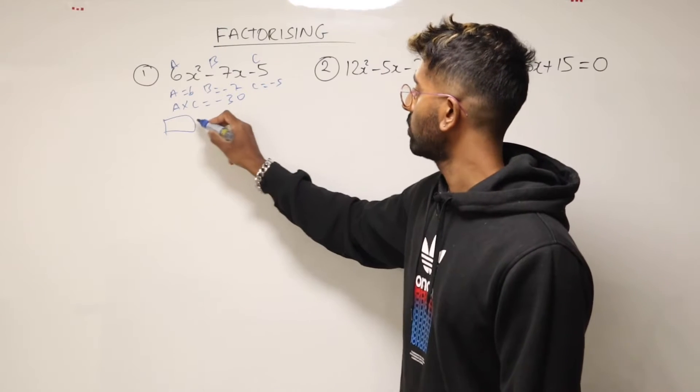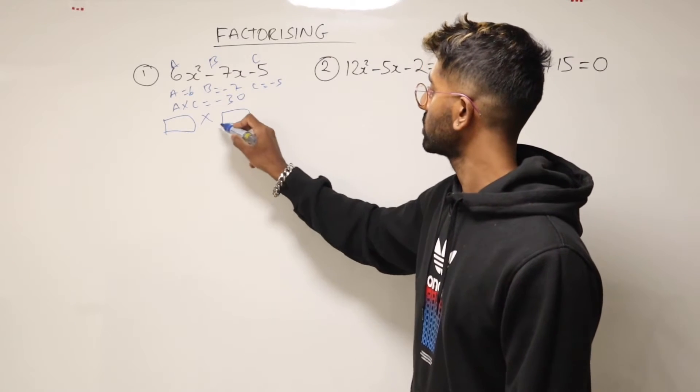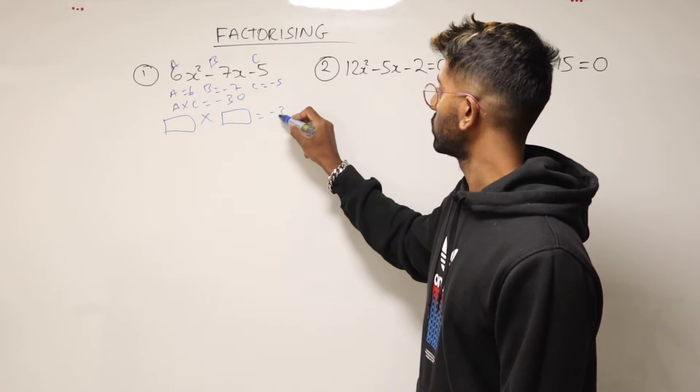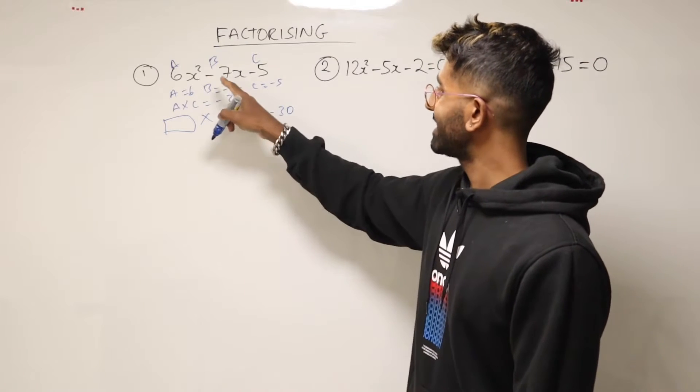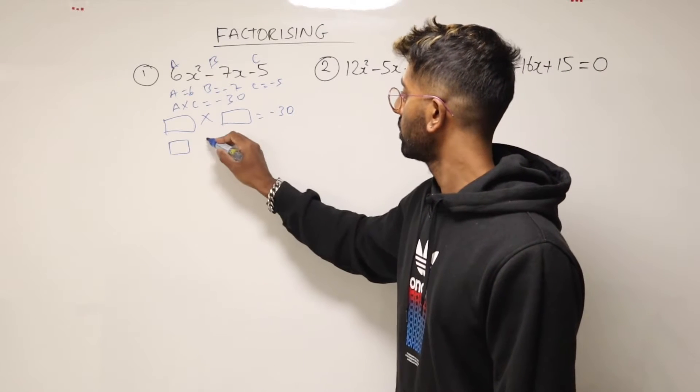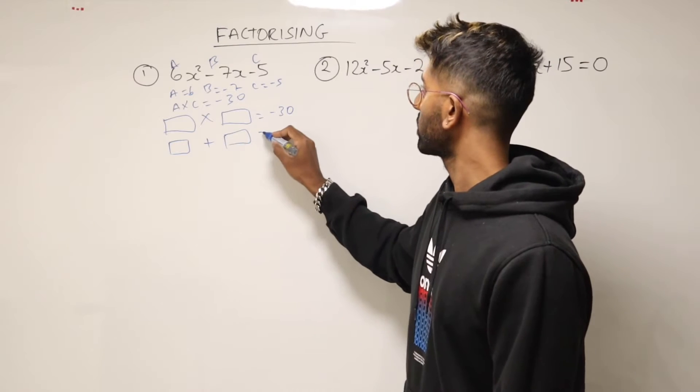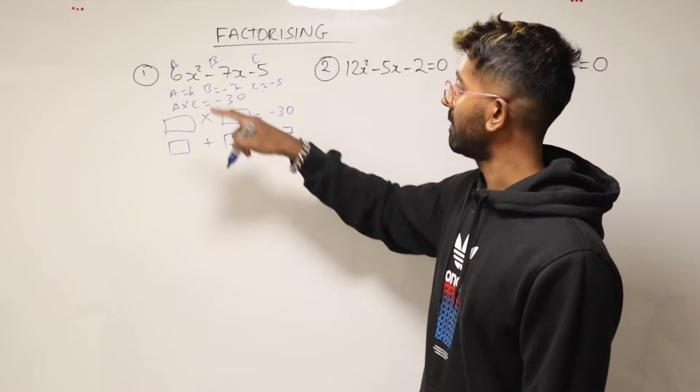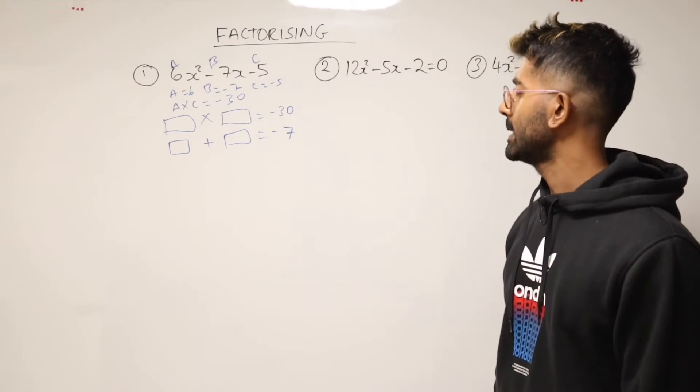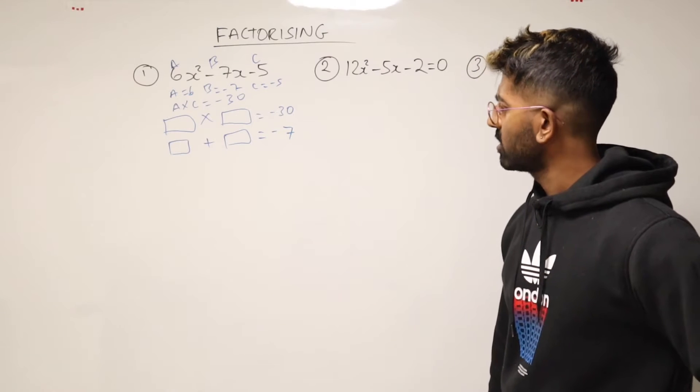So is minus 30. And so what we need to do now is start thinking of two numbers that will multiply to minus 30 but add together to still give you minus 7. So b. And so what's that going to be? I've got to start thinking of some numbers.